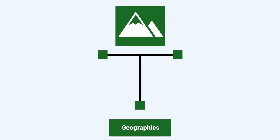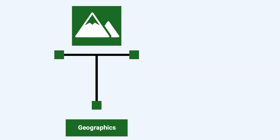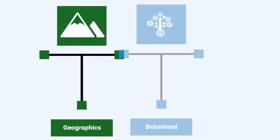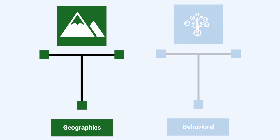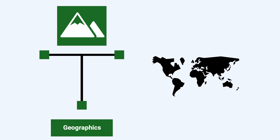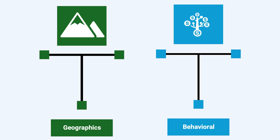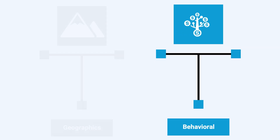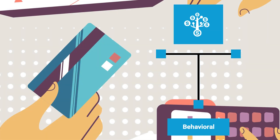We also have two more dimensions: the geographical and the behavioral. The geographic dimension involves segmenting the market according to geographical location, population density, or even the weather. The behavioral dimension has to do with customers' behaviors — their needs and their purchase levels.